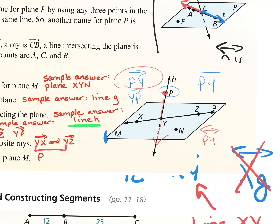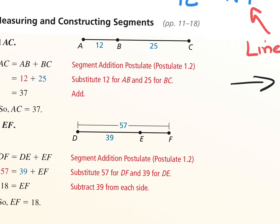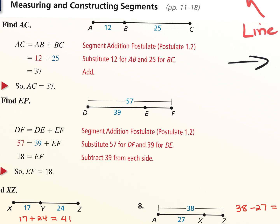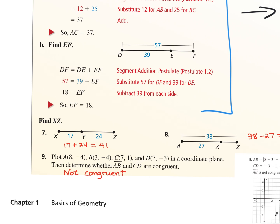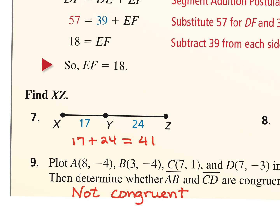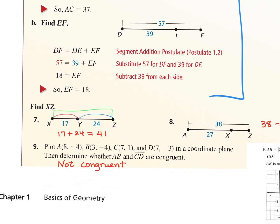Section 1-2 covered measuring and constructing segments, and we saw the segment addition postulate. The postulate tells you: if given the measures of two smaller pieces of a segment, add them together to get the whole. To find the length of XZ, add 17 plus 24. If given the whole segment and asked for a piece, use subtraction. And remember, you're doing this without a calculator tomorrow.